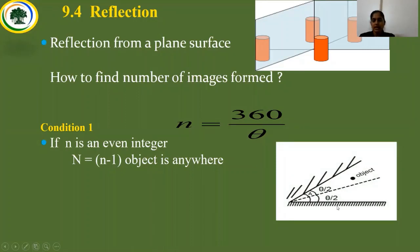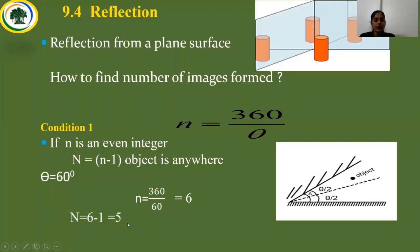For example, suppose two mirrors are inclined with theta equal to 60 degrees. Then n equals 360 divided by 60, giving n equal to 6. Since 6 is an even integer, the number of images N equals 6 minus 1 equals 5. This applies when the object is placed anywhere between the mirrors.